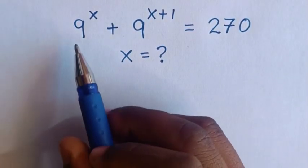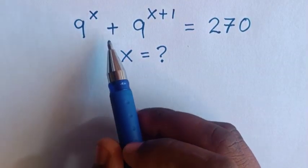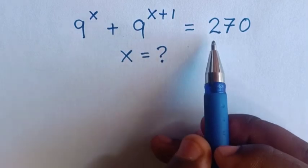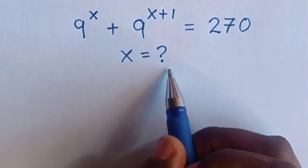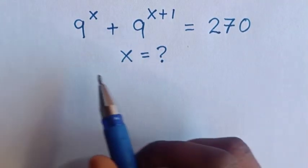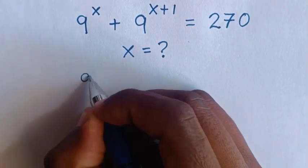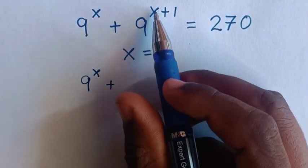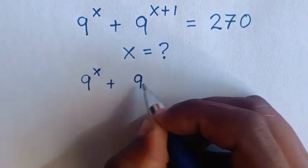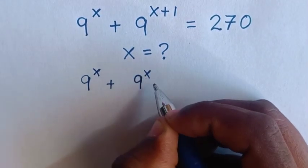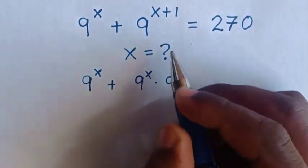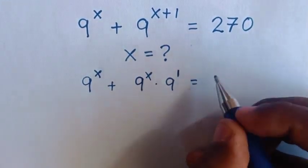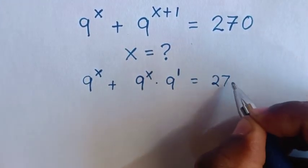Hello. How to solve 9 power x plus 9 power x plus 1 is equal to 270, to find the value of x. From here, 9 power x plus 1 is the same as 9 power x times 9 power 1, which is equal to 270.